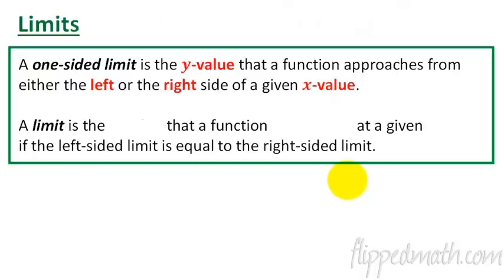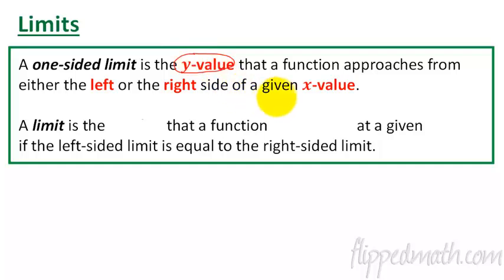Now we're going to move on to limits. We'll do a one-sided limit, and then we'll talk about a two-sided limit. One-sided limits: it is the y value that a function approaches from either the left or the right side of a given x value. Trust me, this will all make sense — we'll go through an example. The big thing to remember is that we're talking about y values. The answer to limit problems are y values, not x values.